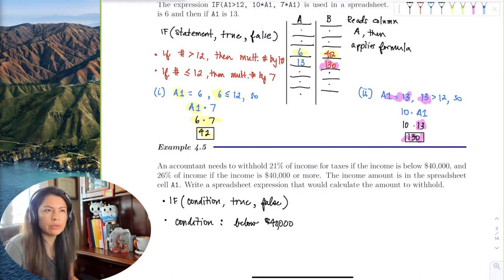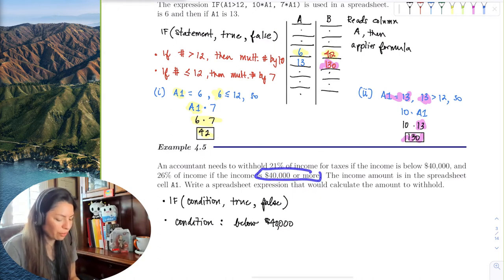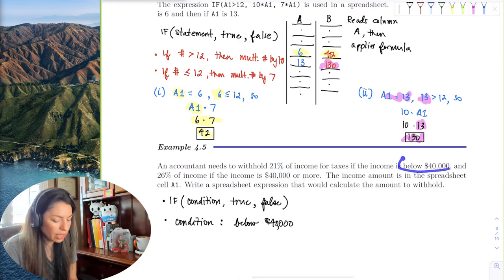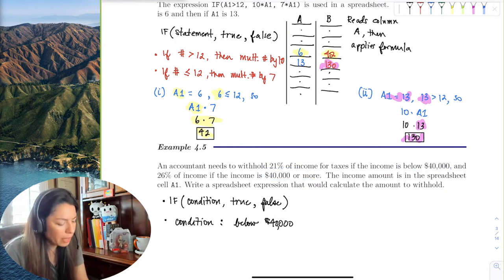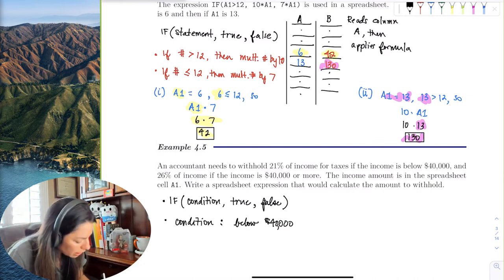So we really have to understand the language in the written expression. '$40,000 or more' does include the $40,000, so below $40,000 is a very strict inequality, and so this translates to strictly less than $40,000.